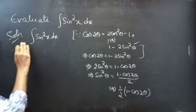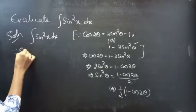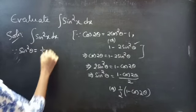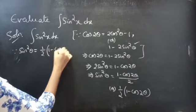Since sin square θ equals 1 by 2 times 1 minus cos 2θ.